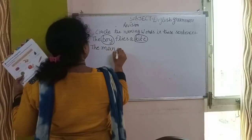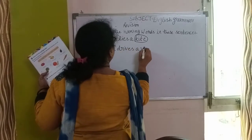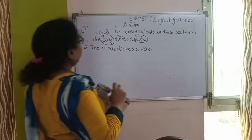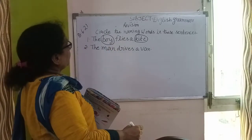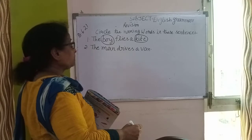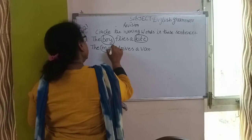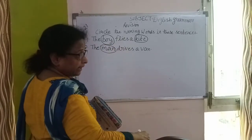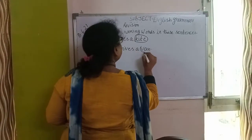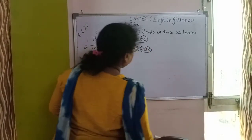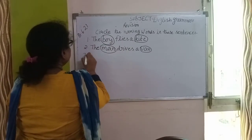Second है: The man drives a van. जो man है, वो van चला रहा है. तो इसमें कौन कौन से naming words हैं? Man, क्योंकि वो एक आदमी है, और van एक vehicle है. इसमें van भी एक naming word है. तो इसमें हमने man और van को circle करेंगे.